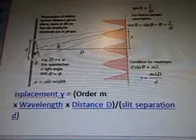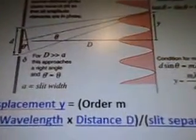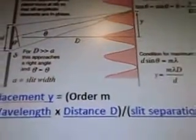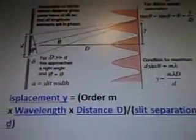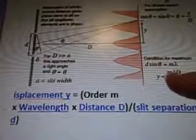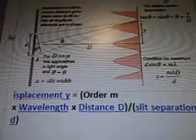Quotes and diagrams from a blog. This is some sort of diagram that says assumption of infinite source distance gives plane wave at slit, so that all amplitude elements are in phase. It's got a bunch of symbols and letters there. Pull it up just a tad so you can see it better. Then it says time equals and there's some sort of equation there. And then for distance screen assumption, there's the condition for maximum equation. And then for D greater than A, this approaches a right angle at theta equals 0.